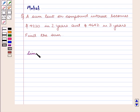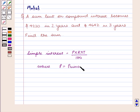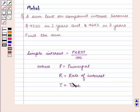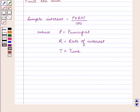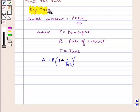Simple interest is equal to P into R into T upon 100, where P is equal to the principal, R is equal to the rate of interest, and T is equal to time. Also, by the compound interest formula, amount A is equal to P into 1 plus R upon 100 raised to power n. With this key idea, let us proceed with the solution.